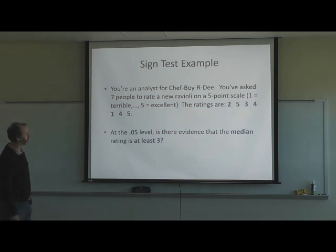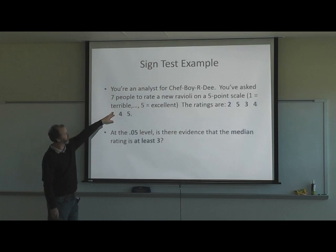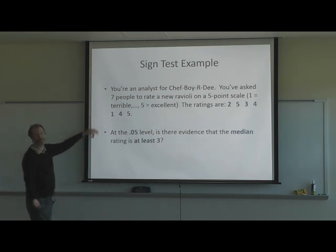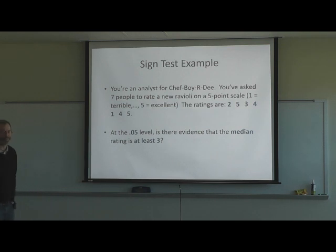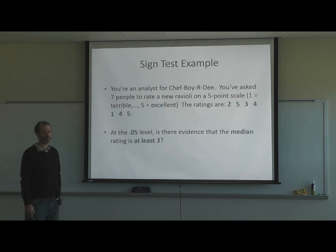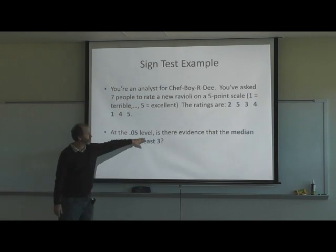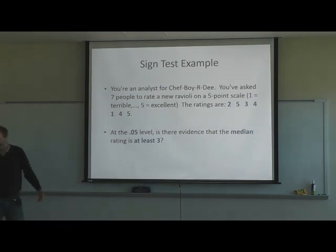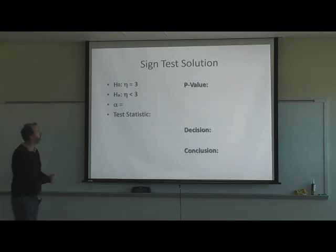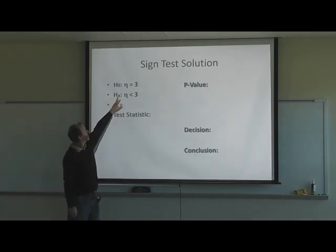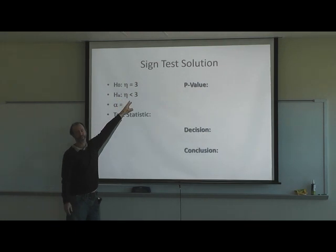Here's an example: say you're an analyst for Chef Boy-R-D and you've asked seven people to rate their ravioli on a five-point scale — one is terrible, five is excellent. At the 0.05 level, is there evidence that the median rating is at least three? The null hypothesis is that the median equals three, because that's what we want to test. The alternative hypothesis is that the median is less than three.